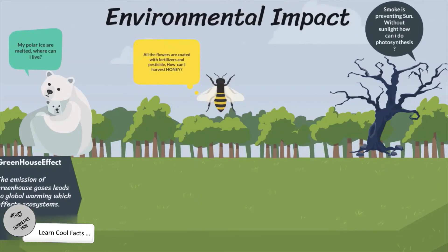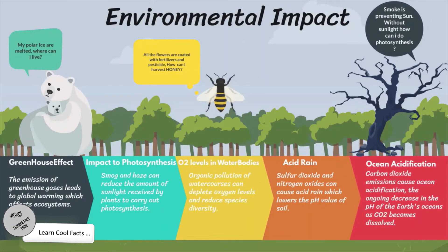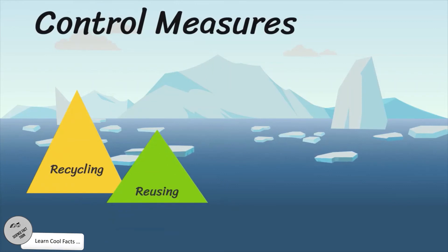For environmental impact: the greenhouse effect — emission of greenhouse gases leads to global warming, which affects ecosystems. Smog and haze can reduce the amount of sunlight received by plants, affecting photosynthesis. Organic pollution of water courses can deplete oxygen levels and reduce species diversity. Sulfur dioxide and nitrogen oxides can cause acid rain, which lowers the pH value of soil. Carbon dioxide emissions can decrease the pH of the Earth's oceans through ocean acidification as CO2 becomes dissolved.